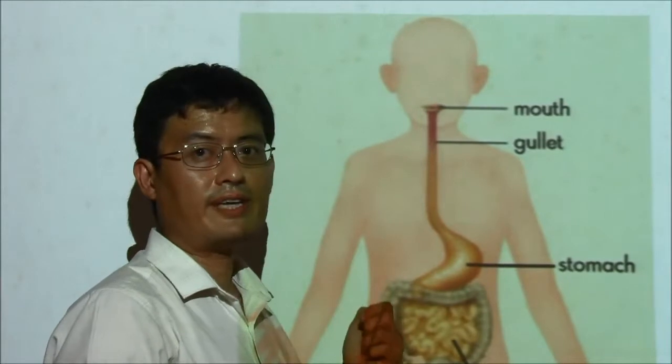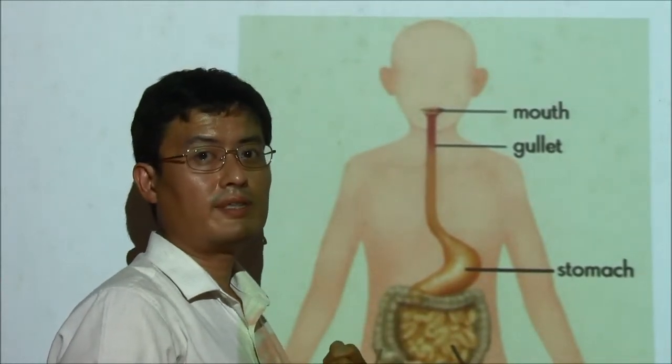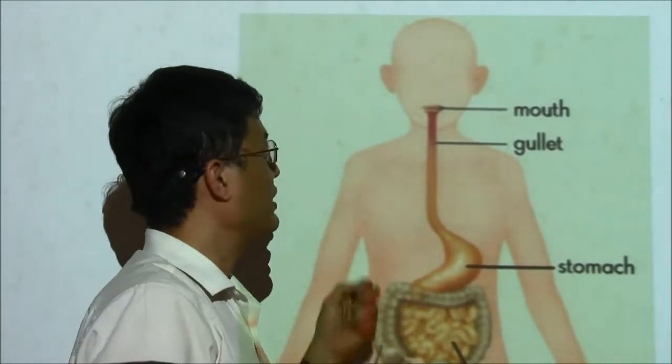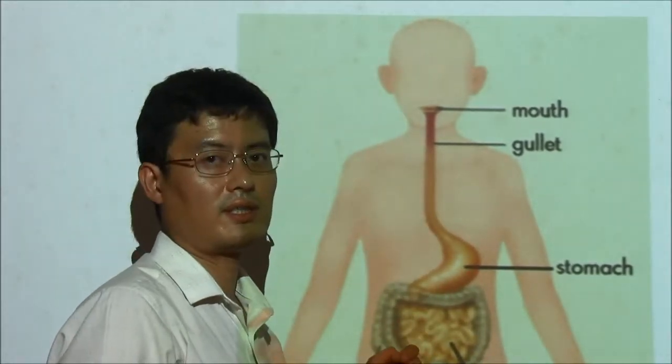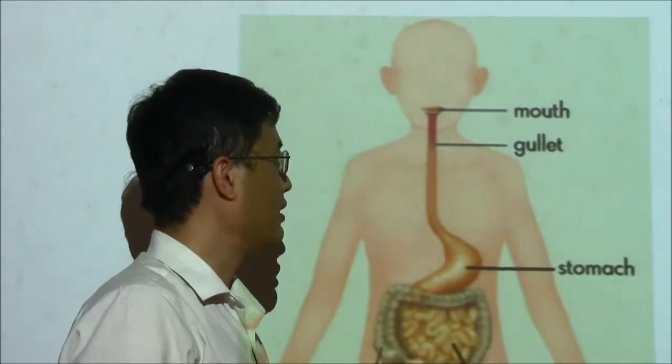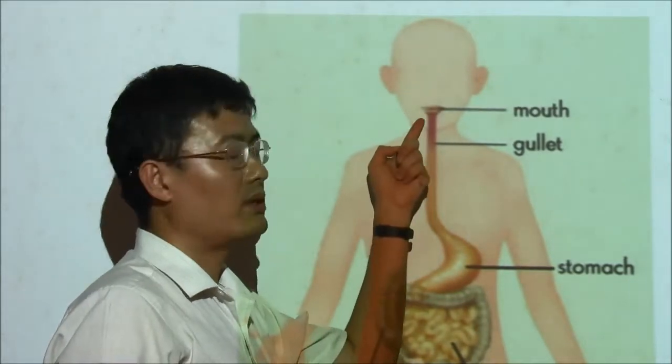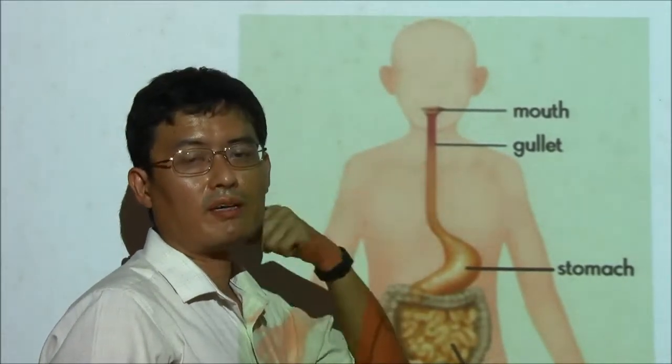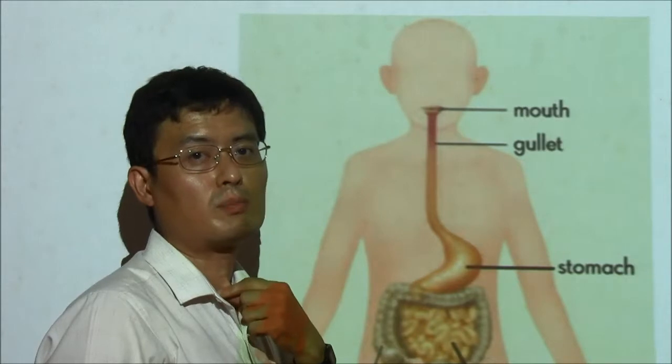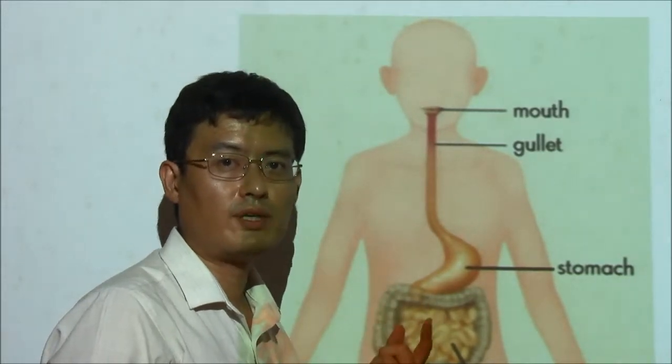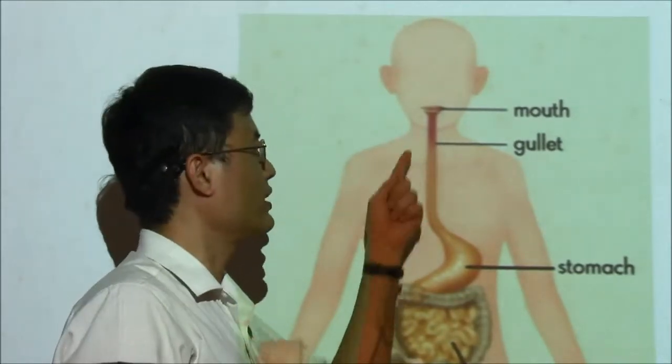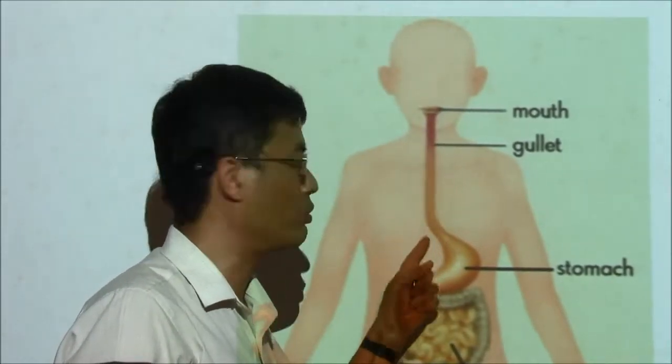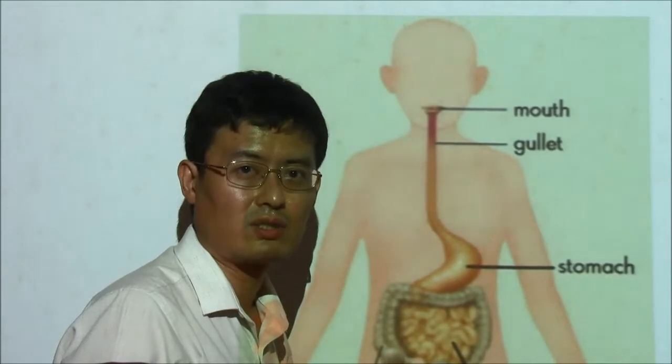And here you have a diagram of the human digestive system. You have the mouth, the gullet into the stomach, into the small intestine and the large intestine. Now, from your mouth, at the back of your mouth, your throat actually splits into two parts. One of them is the windpipe, and the other is the gullet which carries food and water down to your stomach in the digestive system.